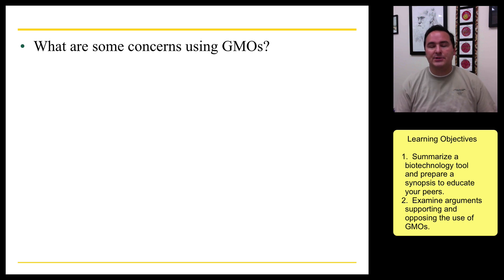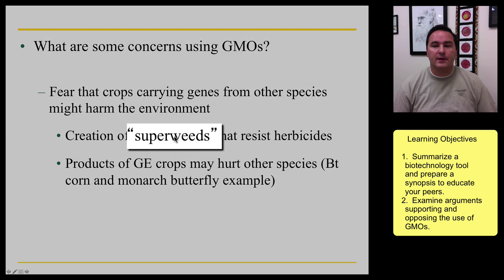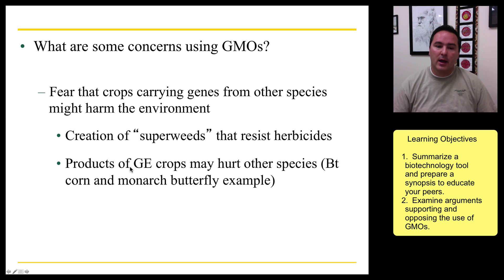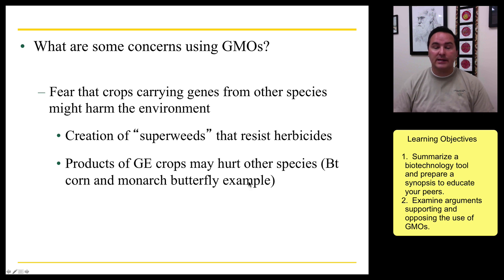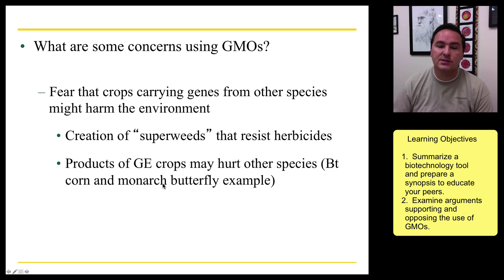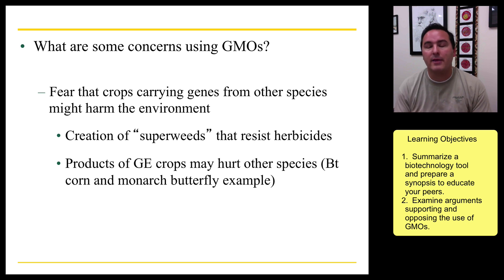There are concerns about genetically modified organisms. Some concerns are that you might be creating super weeds that resist all herbicides, or that products of genetically engineered crops may be hurting other species. We may have tested on humans and found no harm, but maybe it is hurting other species. An example is that BT corn has affected populations of the monarch butterfly. So there are real concerns and we probably ought to be cautious about the way we go about this. But genetically modifying our foods is really the direction most of our foods are going, and that's the way it will be in the future.